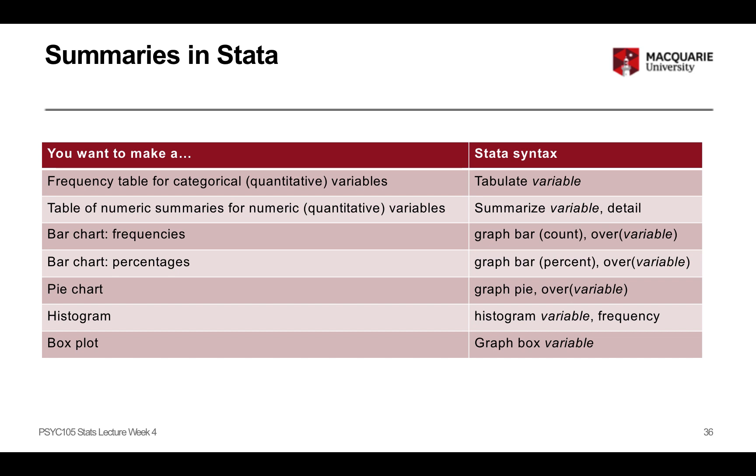So frequency tables, remember, were our categorical variable numeric summaries. The summarise command, the second one here, is a table of numeric summaries for those numeric variables, and then the rest of them are graphs.